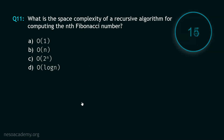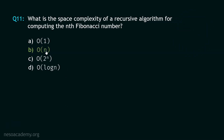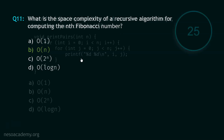And your time starts now. Stop. The correct option is option B: O(N). The space complexity of a recursive algorithm for computing the Nth Fibonacci number is O(N). We learned how to find the Nth Fibonacci number and that the space complexity of the recursive function for computing it is O(N).